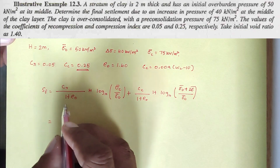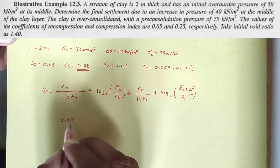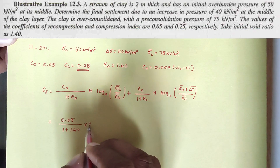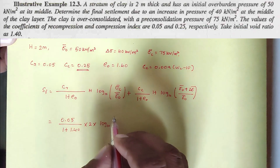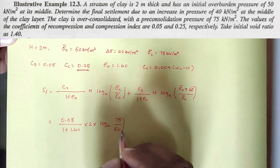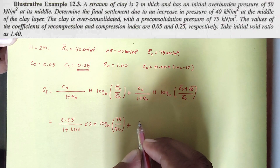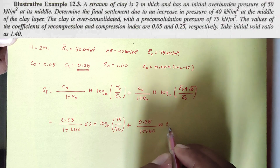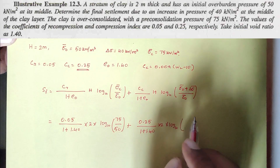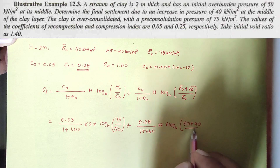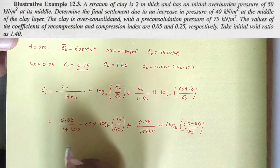Substituting all the values: Cr = 0.05, e₀ = 1.40, H = 2 m, σc = 75 kN/m², σ₀ = 50 kN/m², Cc = 0.25, and (σ₀ + Δσ) / σc = (50 + 40) / 75.